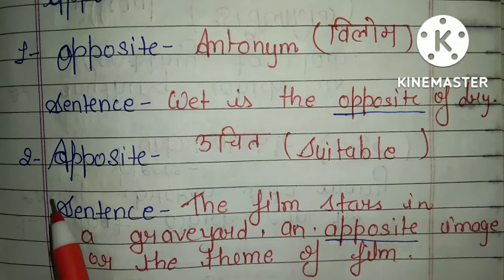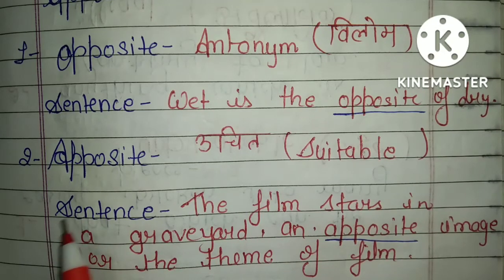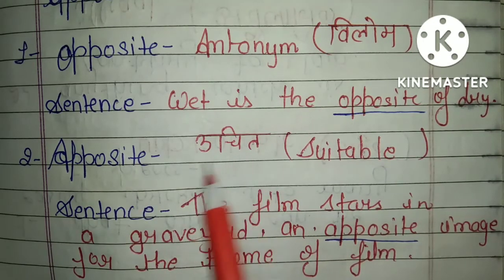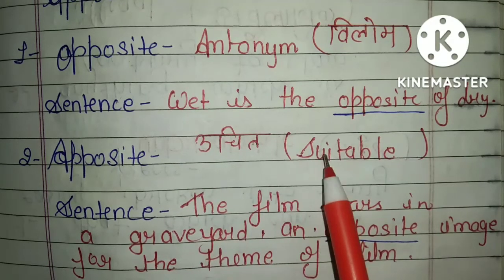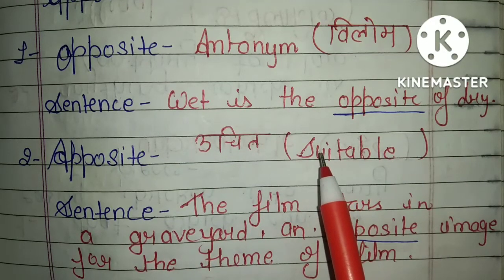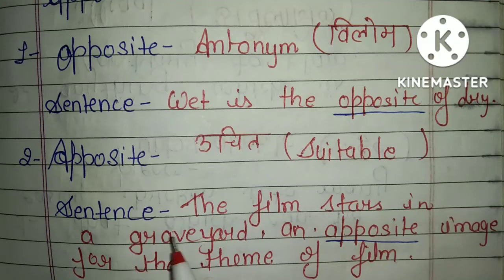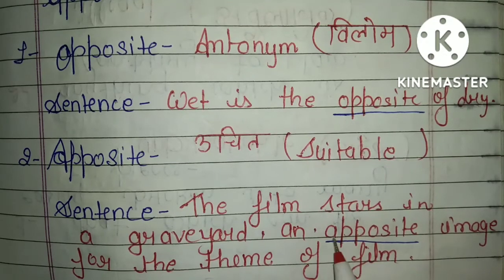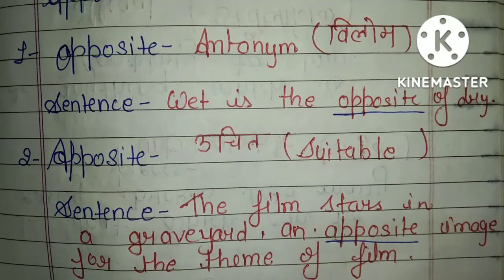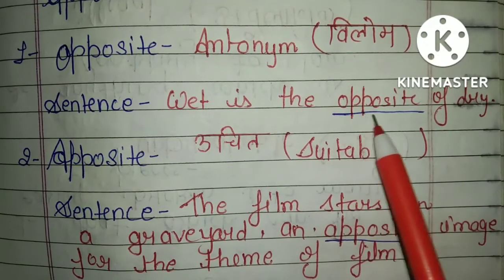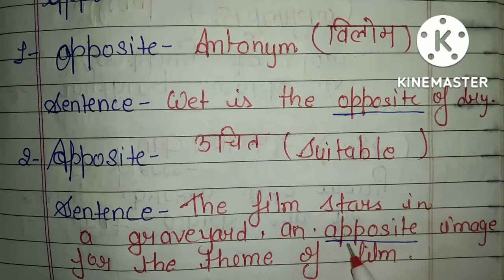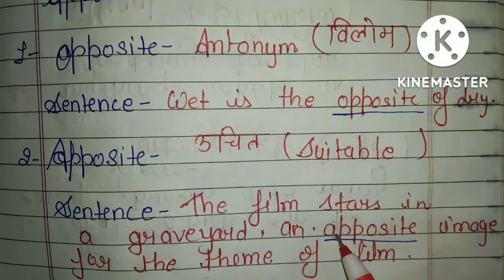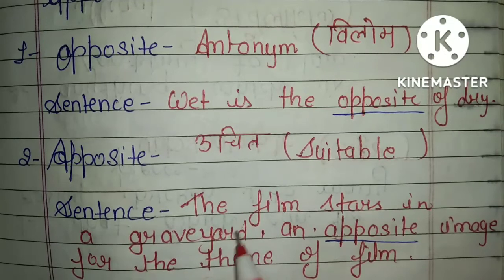Now let's see the second word, which is 'apposite' — spelled A-double-P-O-S-I-T-E. Apposite का हिंदी में अर्थ होता है उचित (appropriate/suitable). The example sentence is: 'The film stars in a graveyard and apposite image for the theme of the film.' The underlined words in both sentences are our homophone words, and now you have seen what the difference is between these two words.